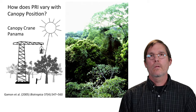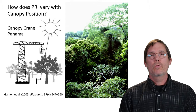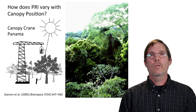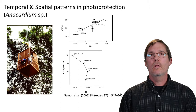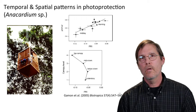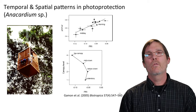One question we've asked is what happens when you look through a canopy — the top gets exposed to high light but the bottom may be shaded. This is work done in the tropical forests of Panama using a canopy crane, where we asked how PRI varies with canopy position from the very top to the bottom. A colleague, Steve Mulkey, rode the gondola from top to bottom hanging instruments out to measure the reflectance of the canopy.